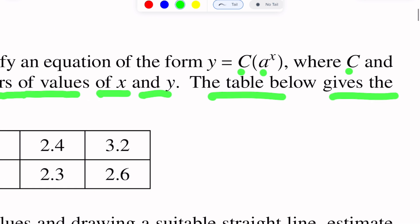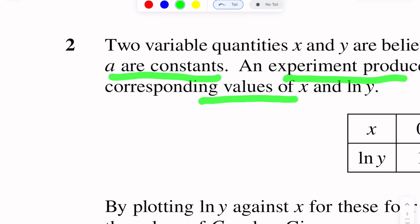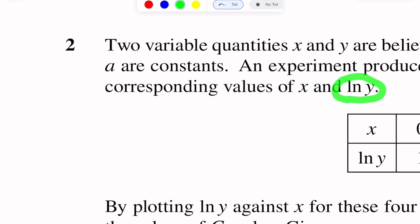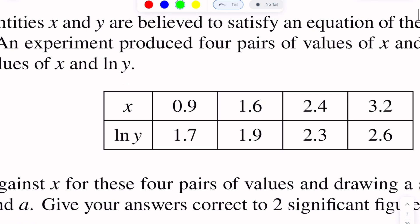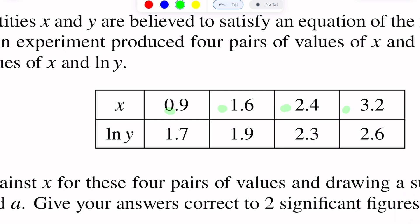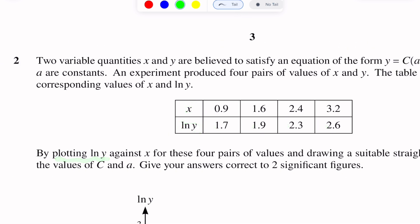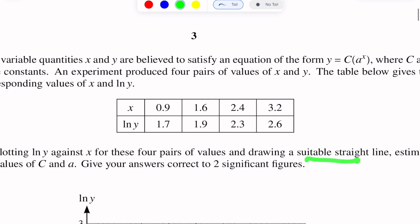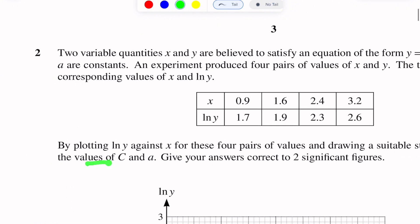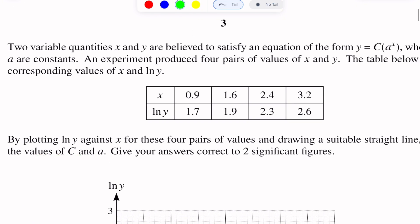The table below gives the corresponding values of X and log Y. By plotting log Y against X for these four pairs of values and drawing a suitable straight line, estimate the values of C and A. Give your answers correct to two significant figures.